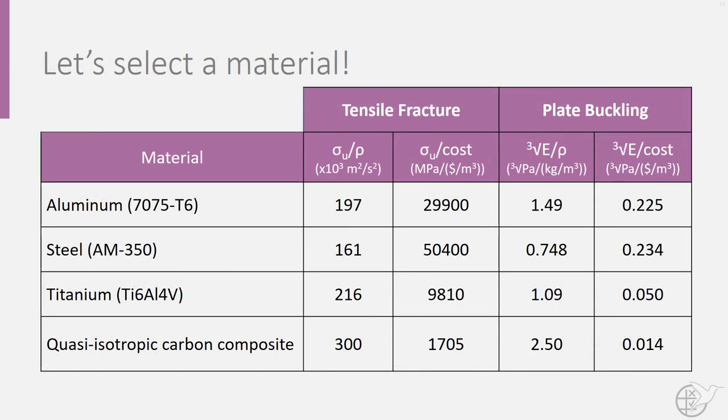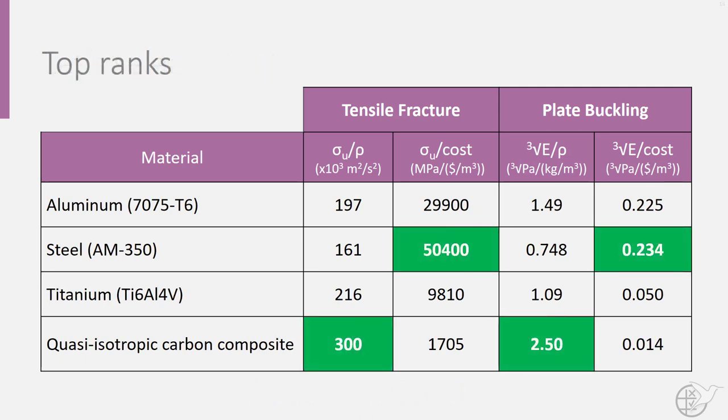After completing the math, we can come up with a table comparing these four materials with our different criteria. Remember, a higher value means that the material is more efficient at meeting the structural capability based on the particular constraint. So knowing this, we can highlight the materials that rank the highest and we see that steel comes out as the best in terms of cost constraints and composites on top in terms of weight constraints.